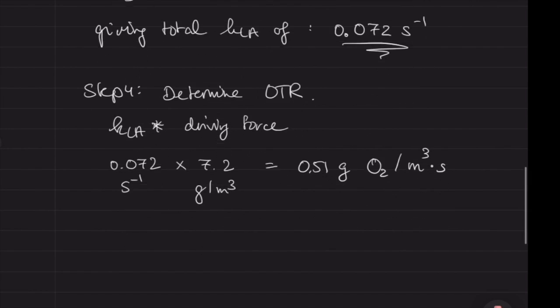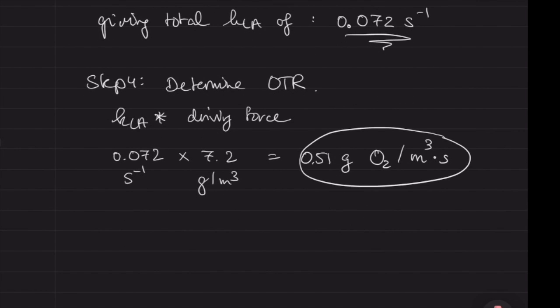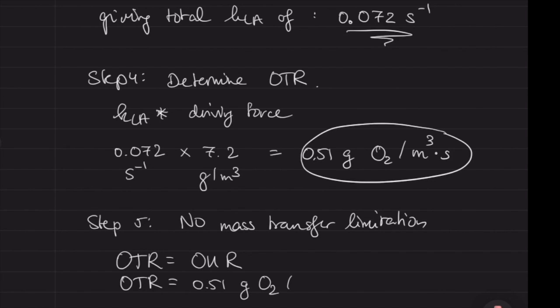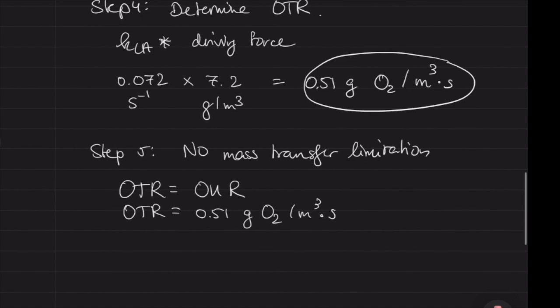This is the first part of the question. Once we know the oxygen transfer rate, the next step is to look at the maximum amount of biomass. If there's no mass transfer limitation, we assume OTR equals OUR. We've just determined OTR, and OUR is normally equal to q times X, where X is the amount of biomass per cubic meter. The q is given, but we need to convert it to the right units.